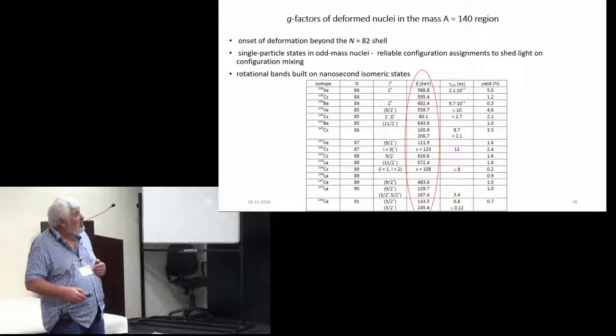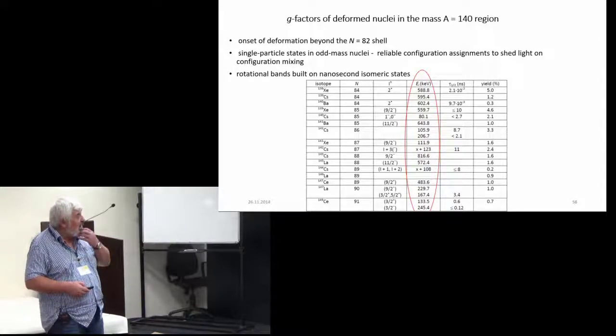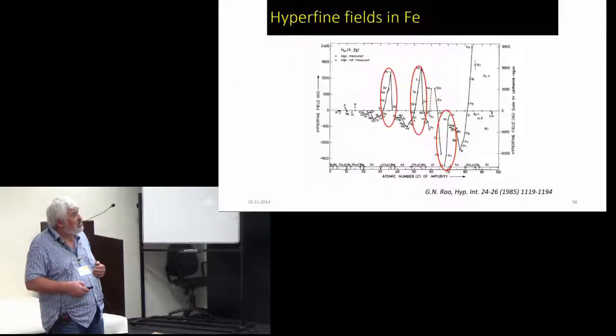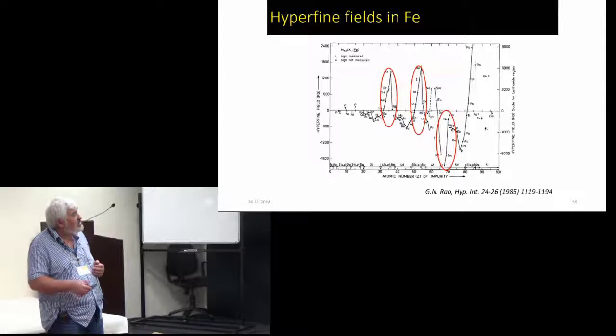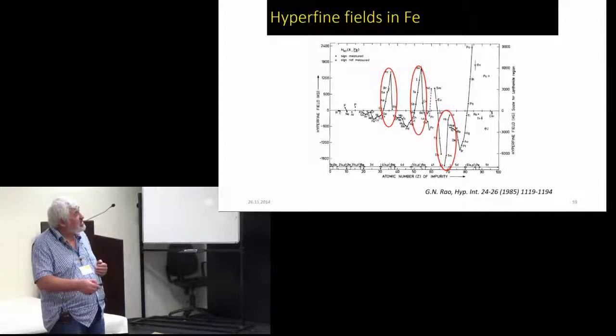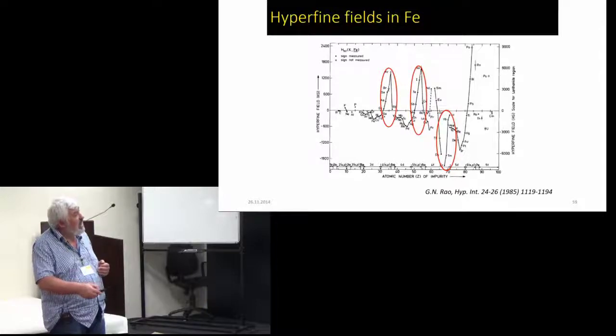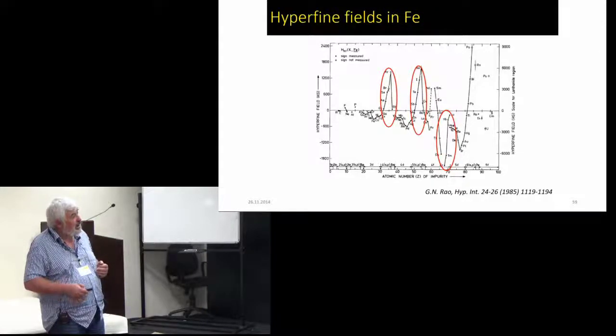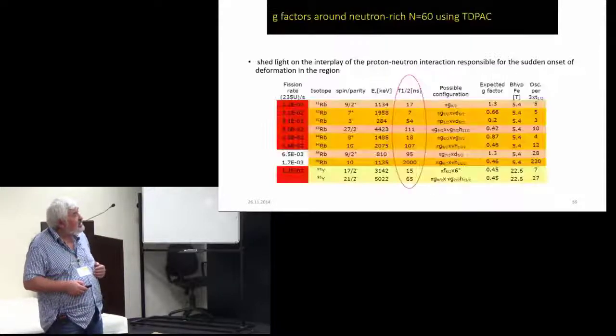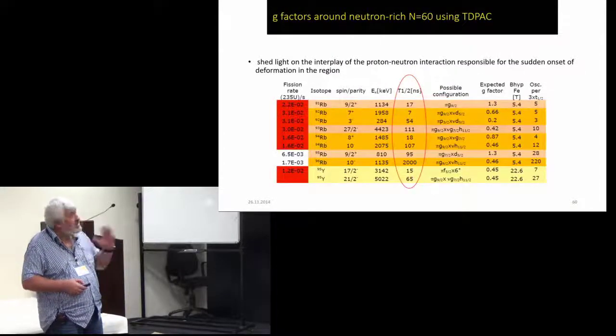There is a table of isomers and gamma ray energies which are known in these isomers and which are accessible for such studies. These are the hyperfine fields in iron for the elements of interest, which makes such a study feasible.